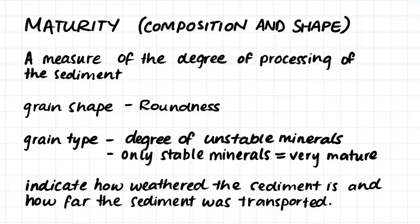Maturity is a measure of the degree of processing of the sediment. Grain shape shows us how far the sediment has been transported. We can also look at the composition of the grains — what type of grains are within the sedimentary rock. When we do this, we consider the degree of unstable minerals that are left over. Unstable minerals will weather first, leaving stable minerals behind. So if there are only stable minerals in a sedimentary rock, we know that the rock is quite mature, as a lot of weathering has taken place. These two things indicate how weathered the sediment is and how far the sediment was transported, and therefore the maturity of the rock.